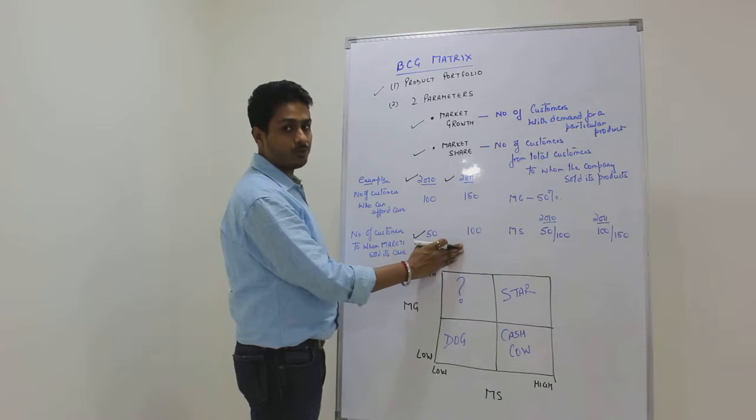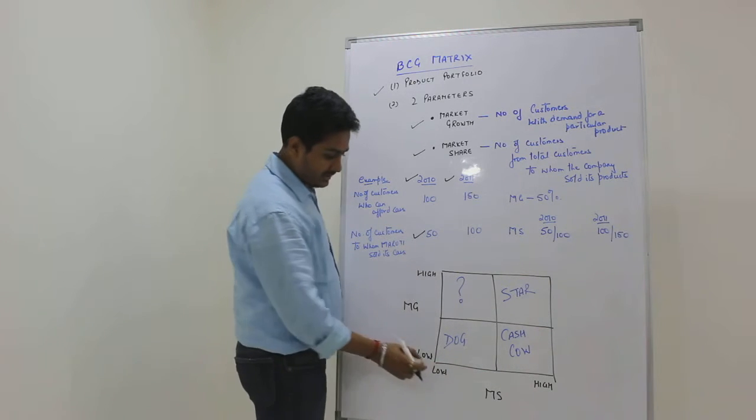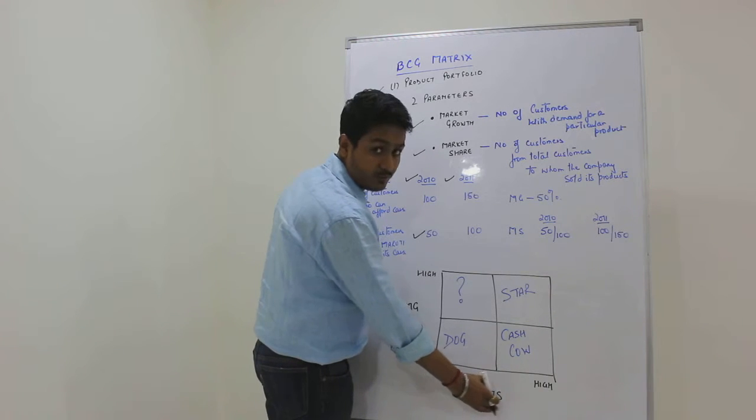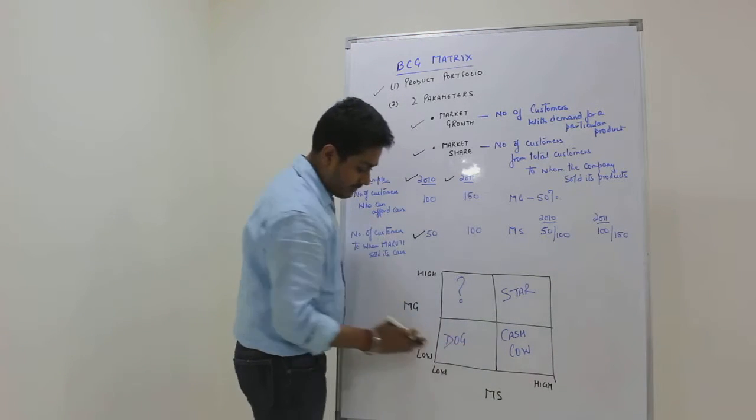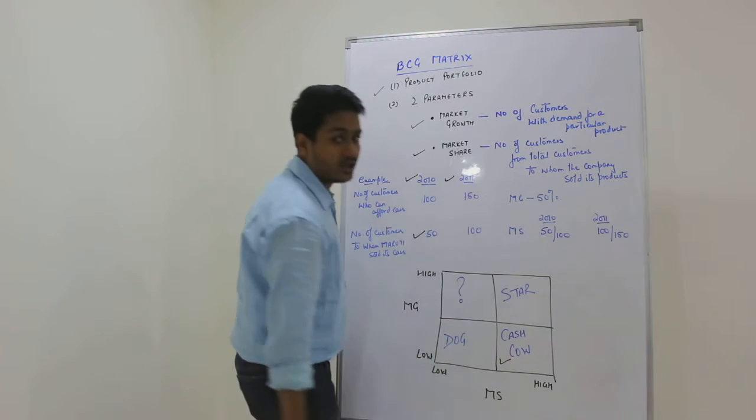The BCG 2x2 matrix is a simple plotting of all products based on these two parameters. Let's take the first case: when market share of a product for a company is high and the market growth is low, that product is classified as a cash cow.